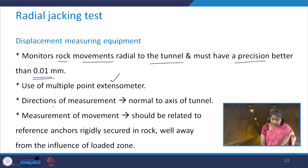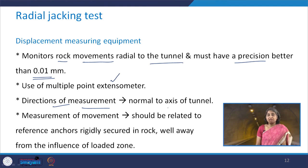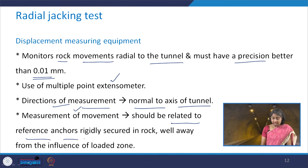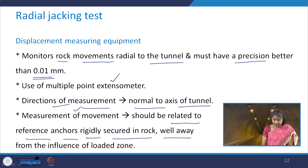The direction of displacement measurement is normal to the axis of the tunnel. The measurements should be related to reference anchors which are rigidly secured in rock and well away from the influence of the loaded zone.